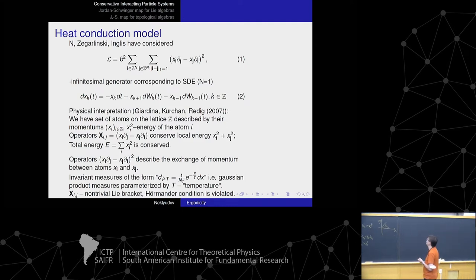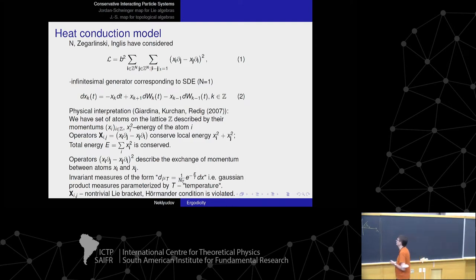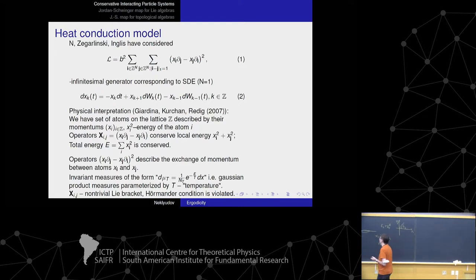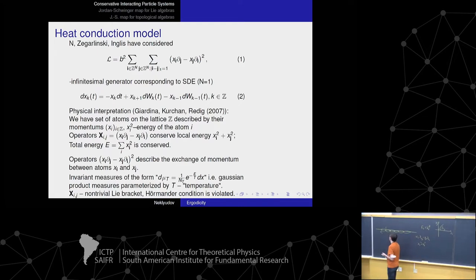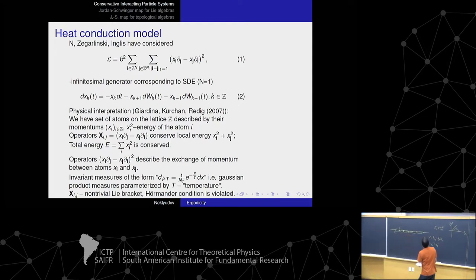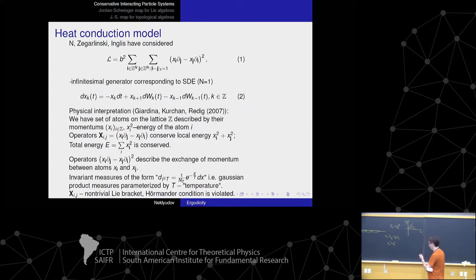What we can also see is that we have a non-trivial Lie bracket between neighboring operators. We denote, from now on, x_{I,J} the generator of rotation.